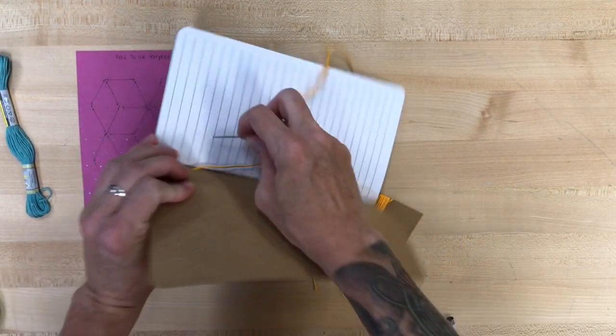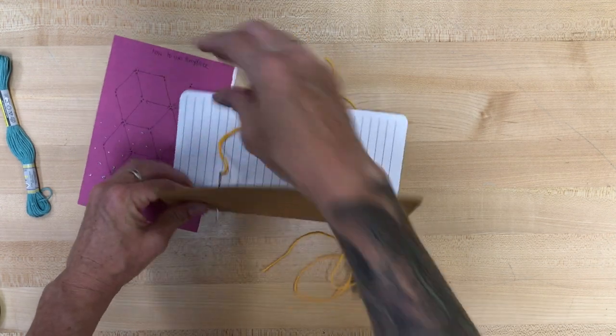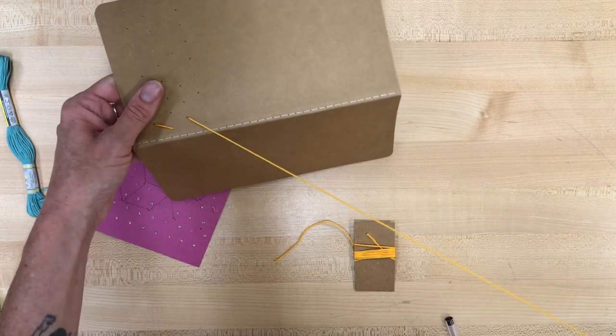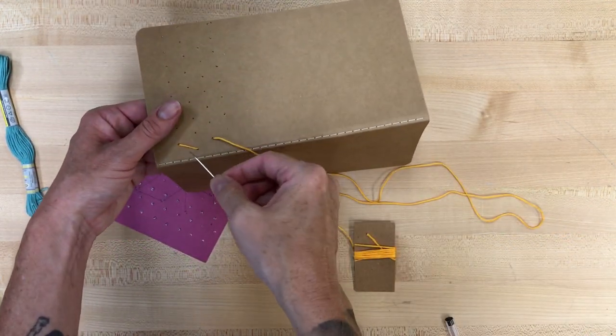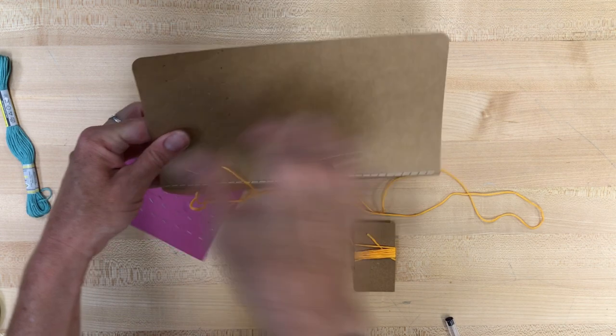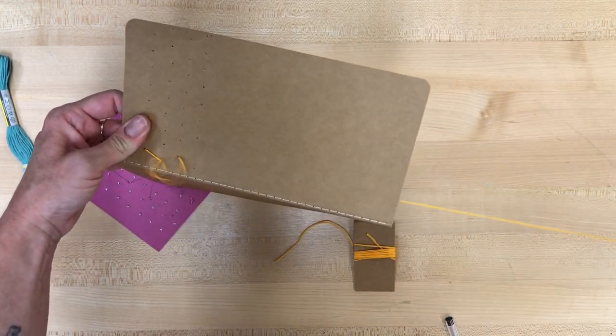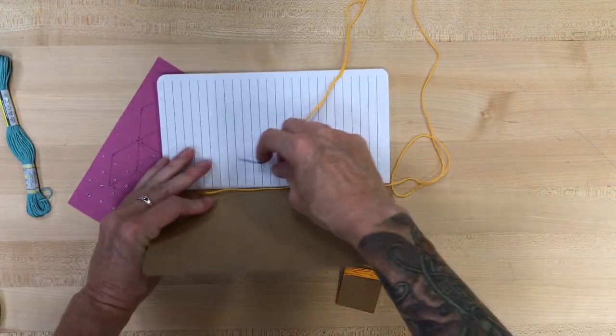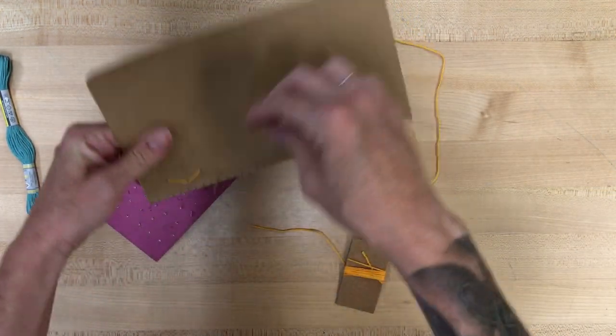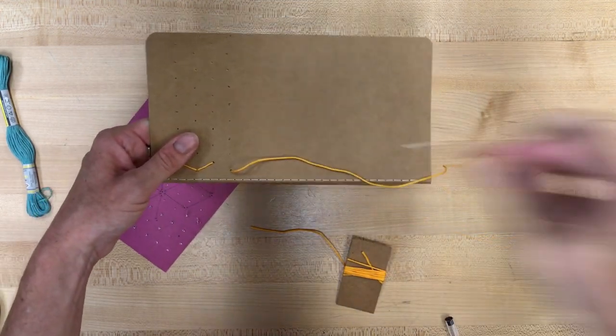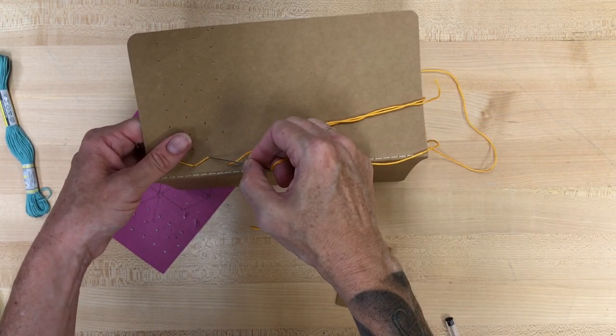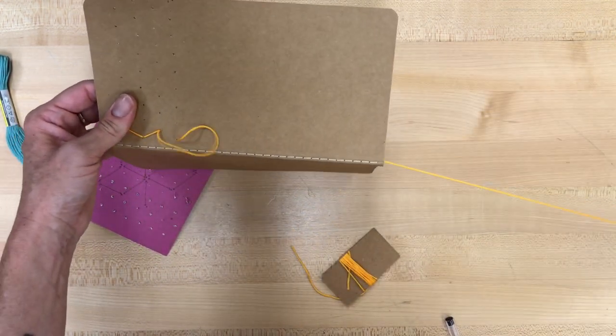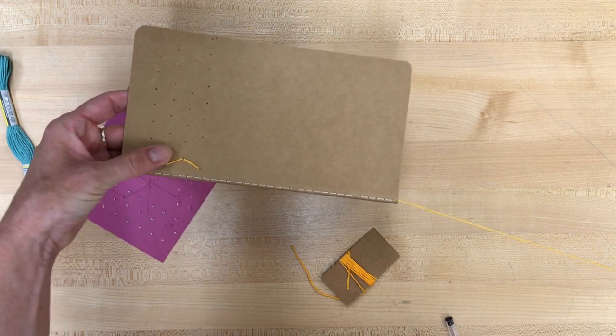And it doesn't really matter from what direction you go from. Once you've pulled your needle through to the front, you can go left or right or up or down. You just want to follow that pattern. And you'll use some of these holes more than once, and that is totally fine. As you can see on the template, sometimes there's a bunch of different arrows pointing to the same hole. So you can see I've used that one now twice that I just put that needle through. And now I've got that starting zigzag pattern.